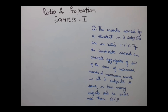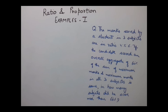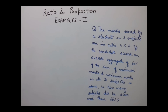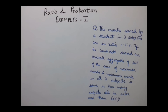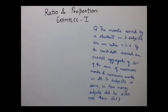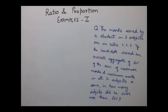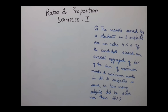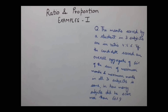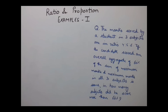The first example: the marks scored by a student in three subjects are in the ratio 4:5:6. If the candidate scored an overall aggregate of 60% of the sum of maximum marks, and the maximum marks in all three subjects is the same, in how many subjects did he score more than 60%?